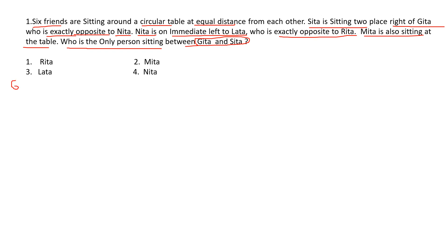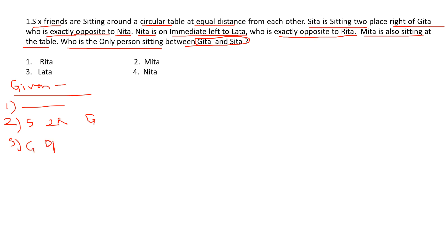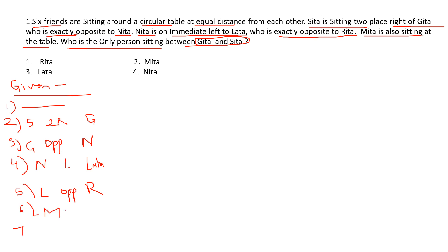What I will do is write the given situation one by one. First: six friends, circular table. Then: Sita is sitting two places right of Gita. Third: Gita is exactly opposite to Nita. Then: Nita is on the immediate left of Lata. Fifth: Lata is opposite to Rita. Then Meeta is also sitting. And we have to find who is sitting between Gita and Sita.